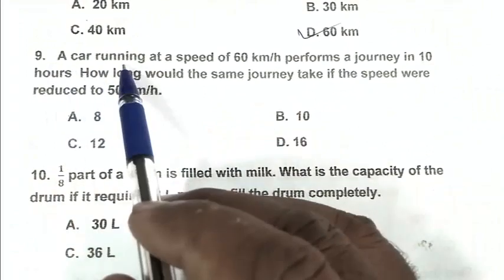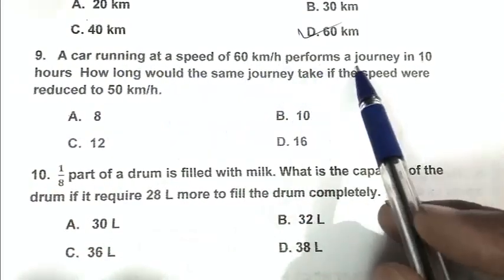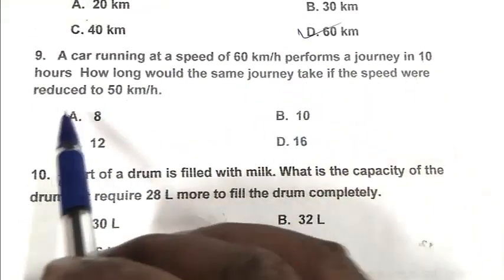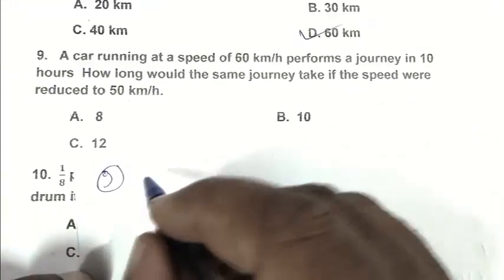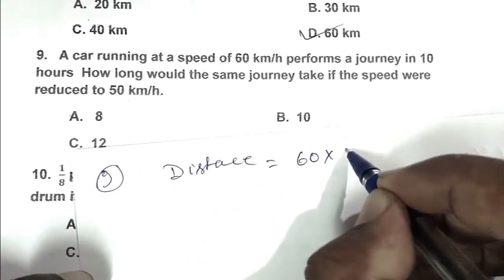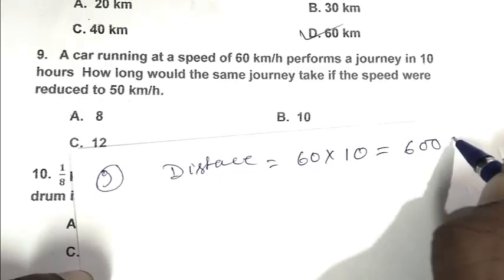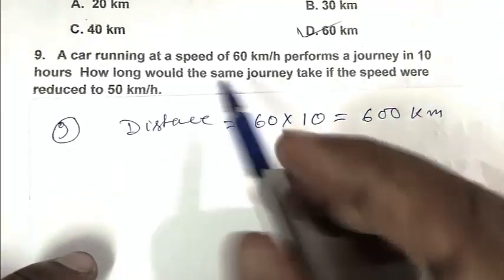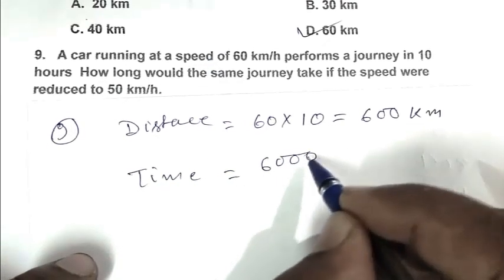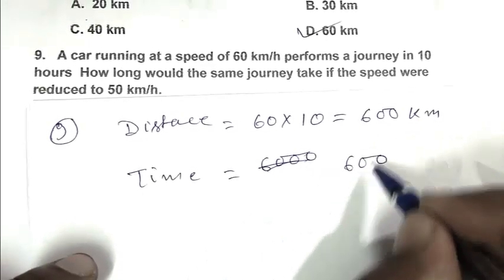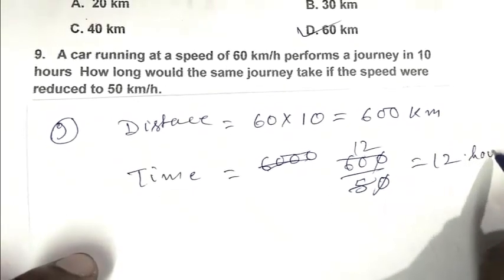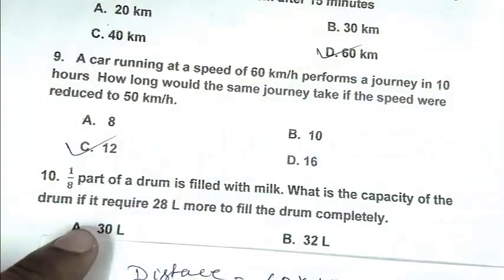Question number 9: A car running at a speed of 60 km/h performs a journey in 10 hours. How long would the same journey take if the speed were reduced to 50 km/h? So friend, distance equals speed multiplied by time, that is 600 km. When the speed is reduced to 50 km/h, time is 600 upon 50, which is 12 hours. So C is the right answer.